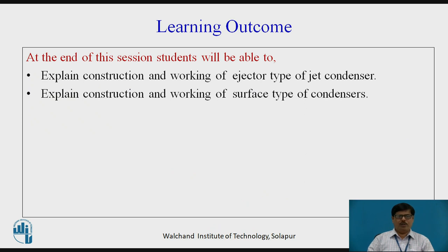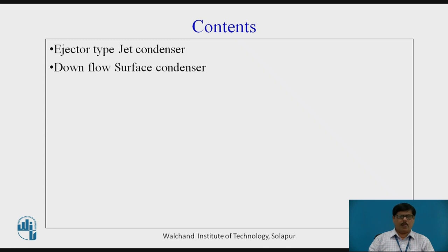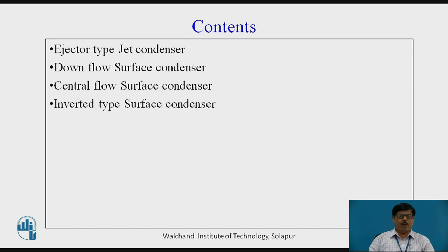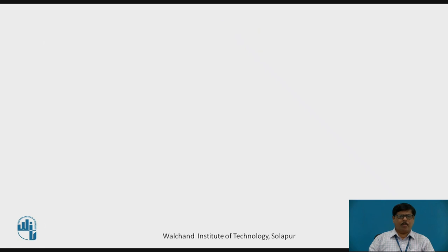At the end of this session, you will be able to explain the construction and working of ejector type of jet condenser. Also, we are going to discuss the construction and working of surface type of condensers. The contents of this video session are ejector type jet condenser, downflow type surface condenser, central flow surface condenser, inverted type of surface condenser, regenerative type of surface condenser, and evaporative condenser.